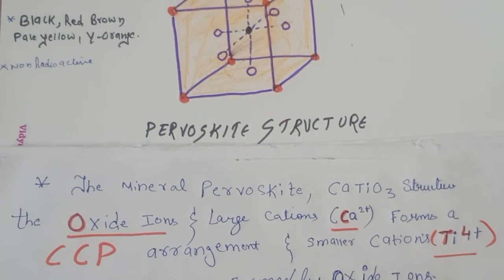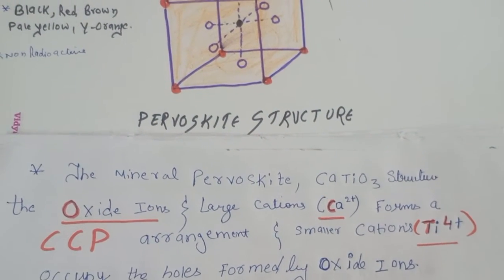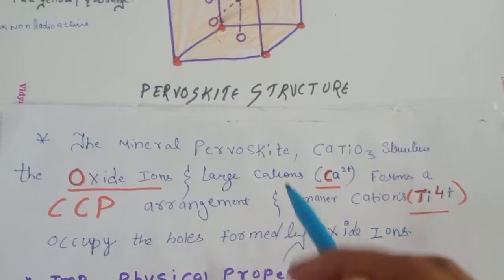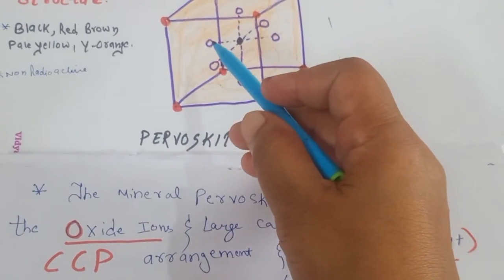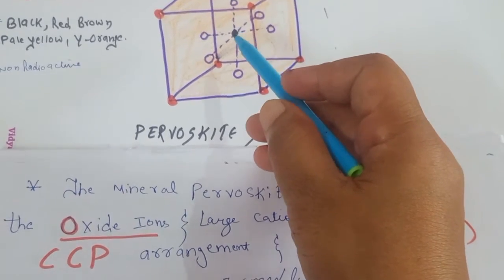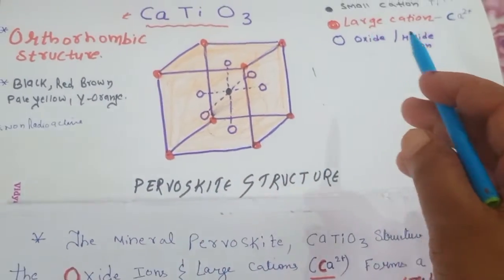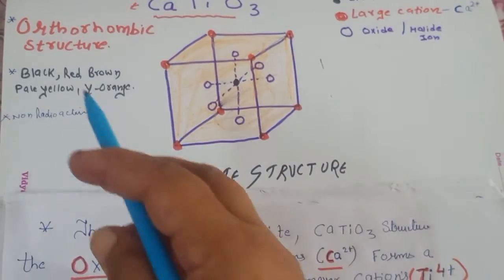And smaller cations, that is our Ti4+, occupies the holes which are formed by the oxide ions. Means these are the oxide ions, they form one hole in the center, so there will be our titanium. And this red big cations are at the corners. So you can see this is an orthorhombic structure.